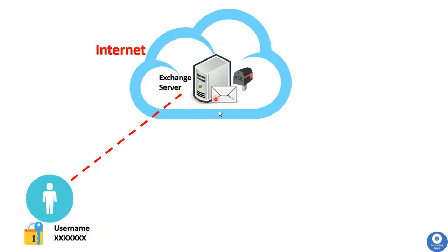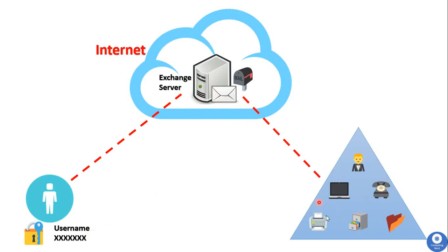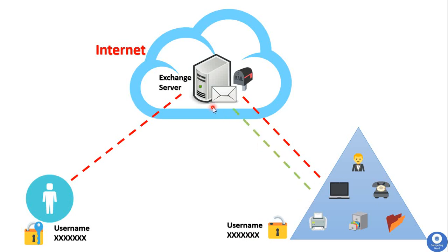The Exchange server transfers the login request to its domain's Active Directory service. The Active Directory verifies the login details of the user. If the credentials are correctly matched, authentication is successful and the user can log in to the Exchange server. You can also create group policies or modifications for users and applications using Active Directory.